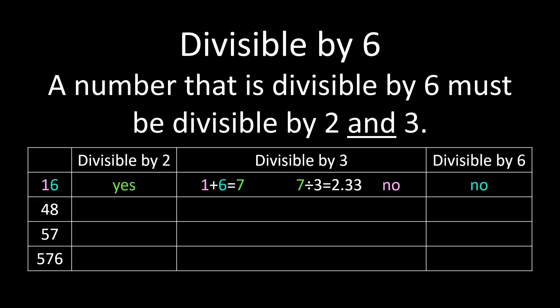We'll run the same test for 48. We'll look at the last digit, the 8. The 8 makes 48 an even number, so it is divisible by 2. Then we'll add our digits, the 4 and the 8. 4 plus 8 is 12. We can divide 12 by 3 and get a whole number answer, so 48 is also divisible by 3. And because it's divisible by both 2 and 3, it's divisible by 6.